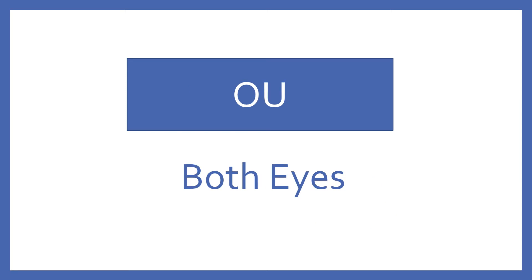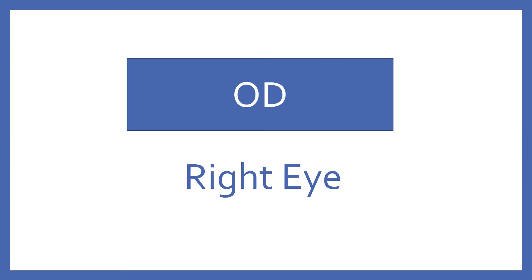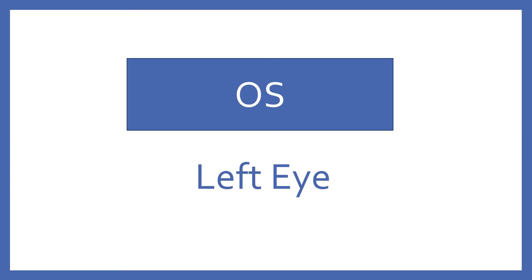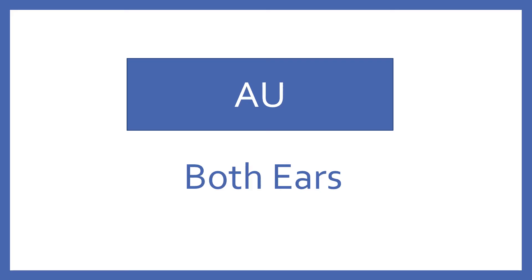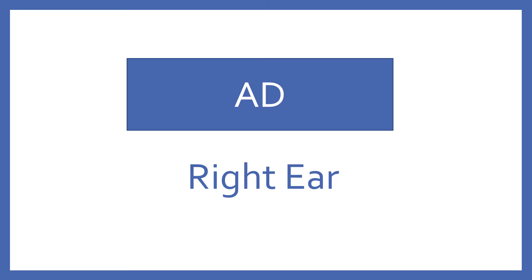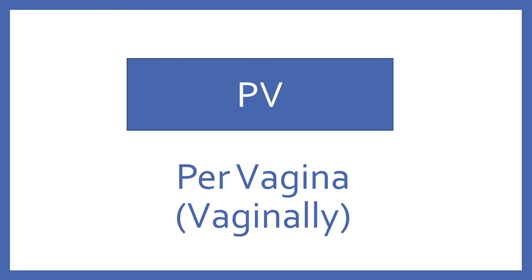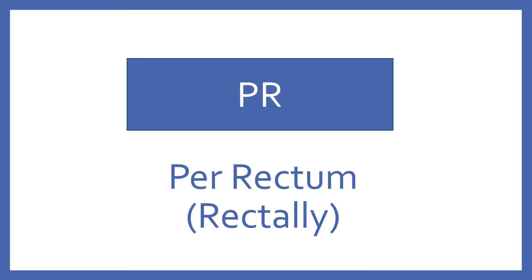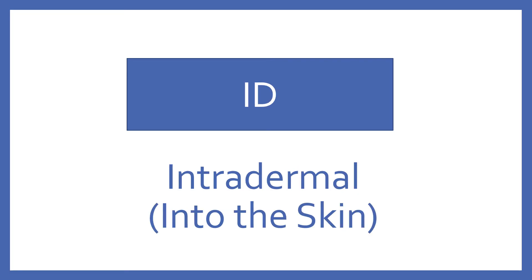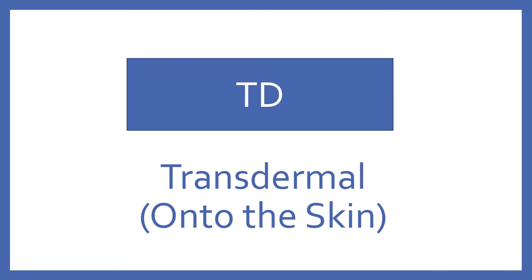OU: both eyes. OD: right eye. OS: left eye. AU: both ears. AD: right ear. AS: left ear. PV: per vagina, or vaginally. PR: per rectum, or rectally. ID: intradermal, which means into the skin. TD: transdermal, which means onto the skin, like a patch. IA: intra-arterial, into an artery. IC: intracardiac, which means into the heart.